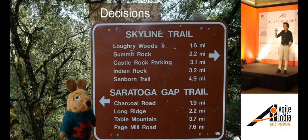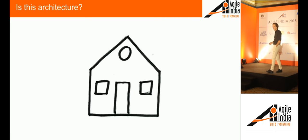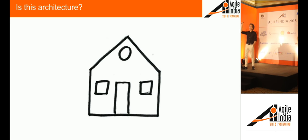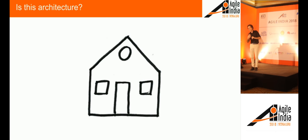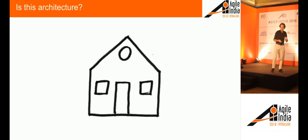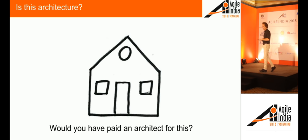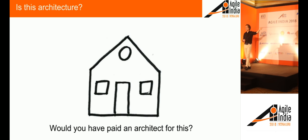The last important thing is decision-making. The point of a model is to help you make a decision. I often ask people whether a certain diagram is architecture. In the classic definition of architecture it might pass the test — the components, the constraints, how it's put together. But for me it fails the test because it doesn't represent any decisions. A good test is: would you have paid an architect for this? If there's no decision, the answer is probably no — this is cookie cutter.